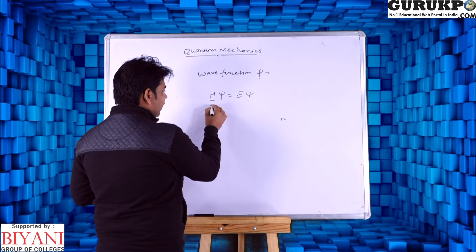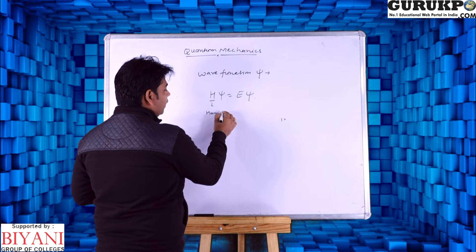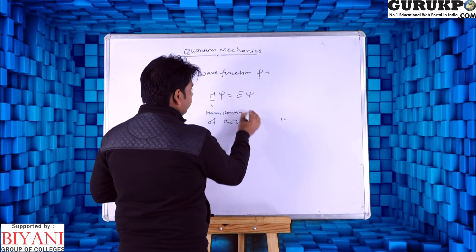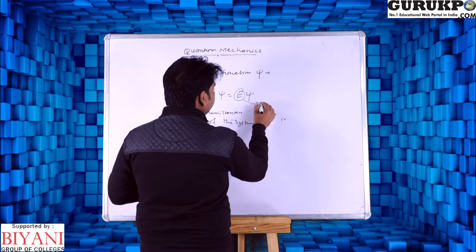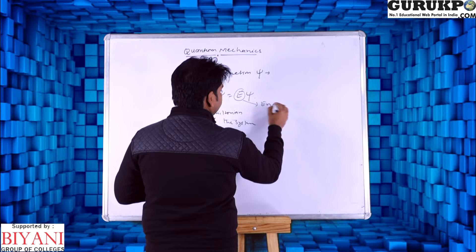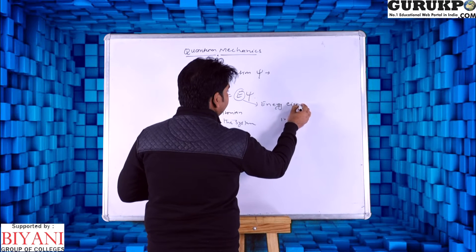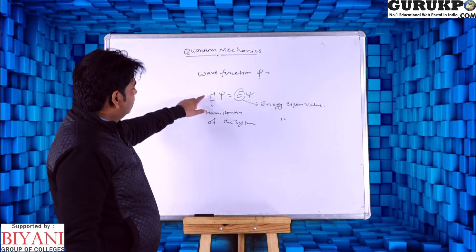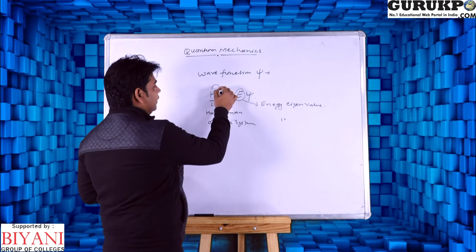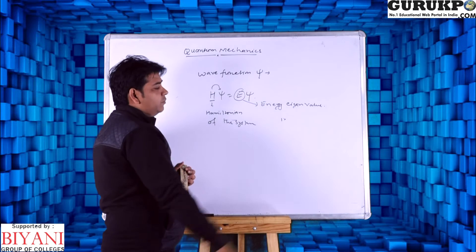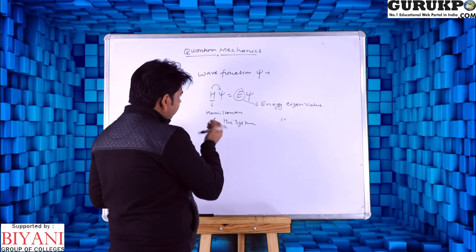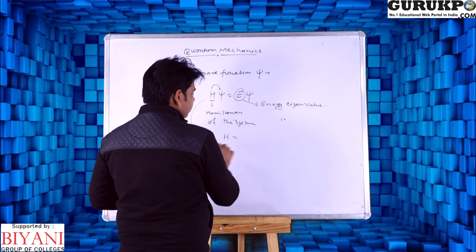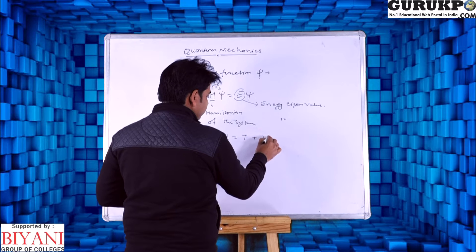Here H is the Hamiltonian of the system, and E is the energy eigenvalues. H acts on psi and gives the energy eigenvalue E. Here H is the total energy of the system — kinetic energy plus potential energy.